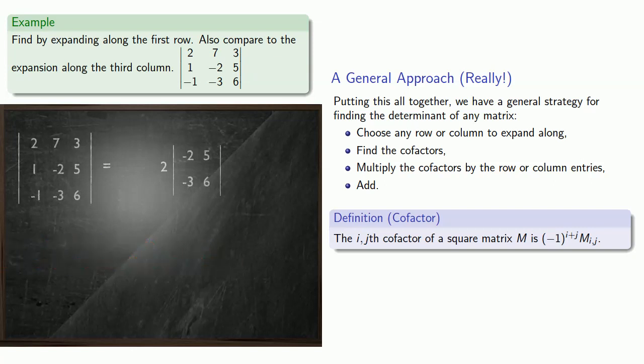And since this is the value from the first row, first column, we'll multiply this by minus 1 to the power 1 plus 1. Our next entry is 7. We'll form the minor by eliminating the row and column to get the sub-matrix. And since this is the first row, second column entry, we'll multiply this by negative 1 to power 1 plus 2.